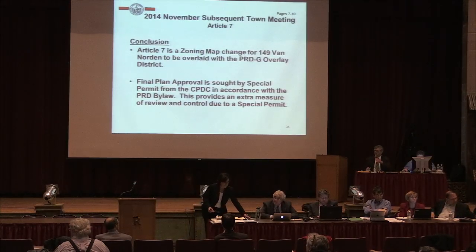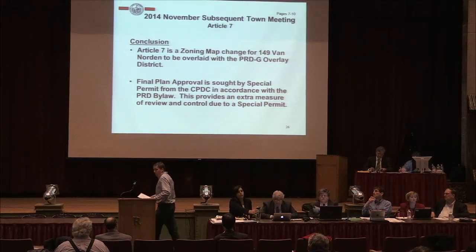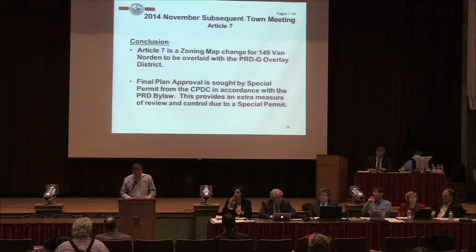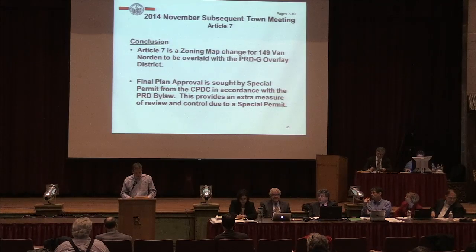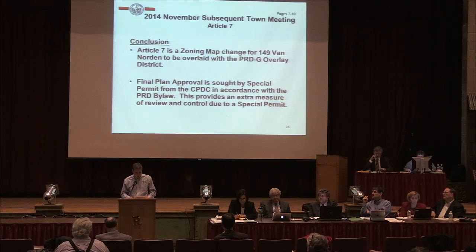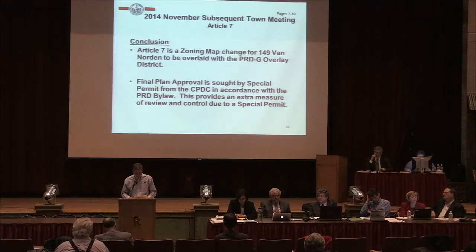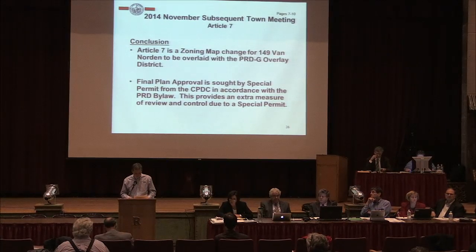CPDC report, Mr. Hanson. Good evening. On August 11, 2014, the CPDC convened to hold a public hearing on the proposed Article 7 to amend the Redding zoning map to overlay the Planned Residential Development General, PRD-G, overlay district on a parcel of land at 149 Van Norden Road. All documents were made available at Town Hall. The public hearing was opened at approximately 7:30 PM, a presentation was made by the Town Planner, and discussion followed. The public hearing was closed that same evening, and the CPDC voted 4-0-0 to recommend the proposed zoning map change to Town Meeting.